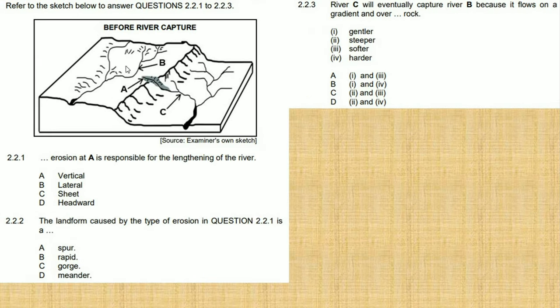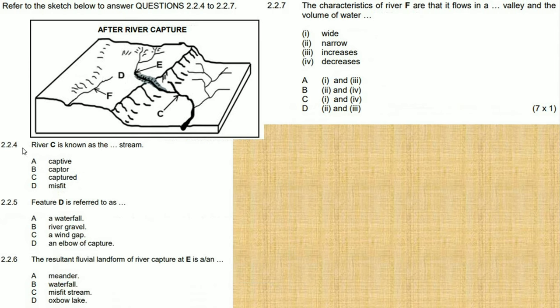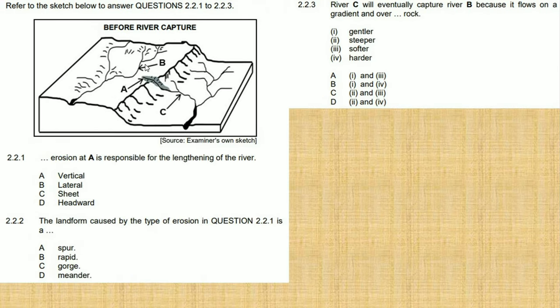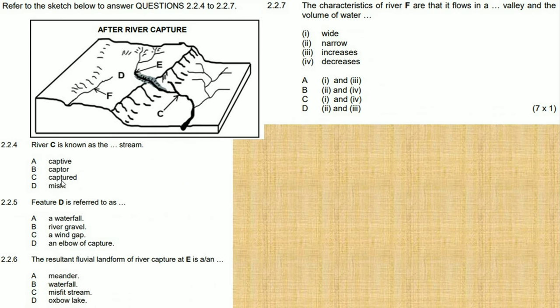So we call river C the capture stream, meaning it captures the waters of this river. So river C will be the capture stream, which is B. And then feature D is referred to as... What is feature D?